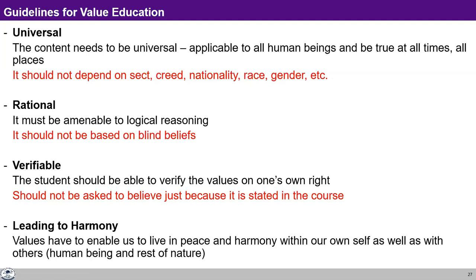The third one: it has to be verifiable — we should be able to verify it on our own right. We'll see the details of what it means to be verifiable on our own right. Every one of us can verify it on our own right, through our own natural acceptance and through our own experiential living with it. It should not be asked of us to believe it just because it is stated in this course or any such place.